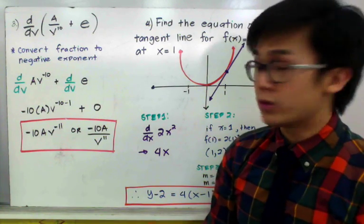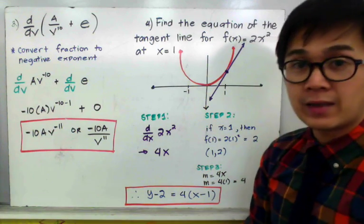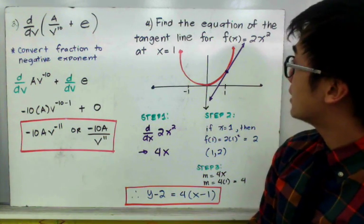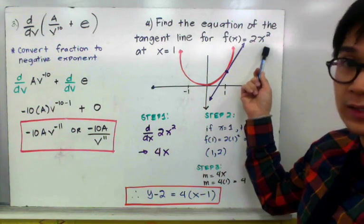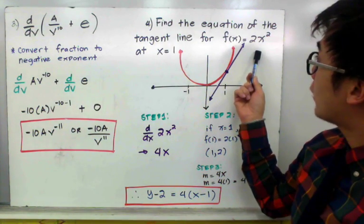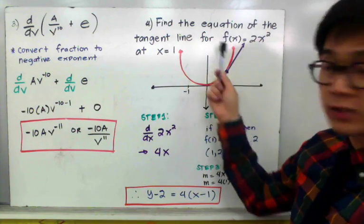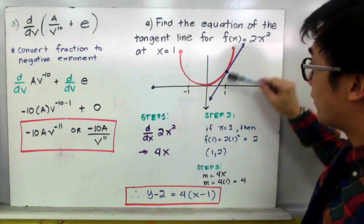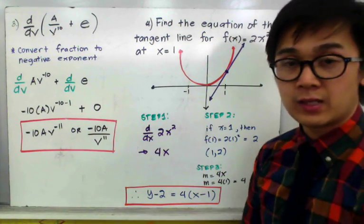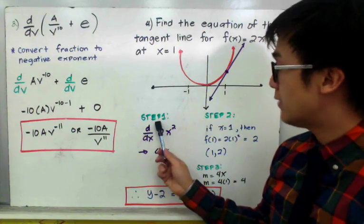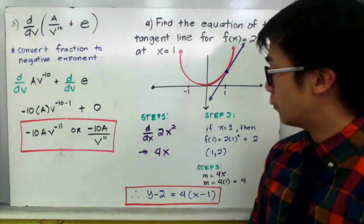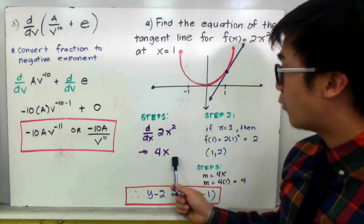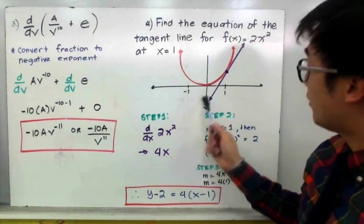For example number 4, this is an application of the derivative rule in finding the equation of a tangent line. The function is 2x squared — a quadratic equation — and we need to find the equation of the tangent line at x equal to 1. If we graph 2x squared, which is a parabola, the tangent line at x equal to 1 can be found using the derivative. First, we find the derivative of 2x squared, which is 4x, so the slope of our tangent line is 4x.